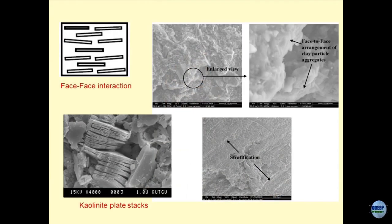In your soil mechanics books, you have studied face-to-face interaction of particles — you call this dispersed structure. In real life, this is how it looks. It is very intricate — these are the sheets of clay particles. You can see very clearly: this is one sheet of a clay particle sitting on another sheet, another sheet, and so on — just like the loaves of bread. This is what is the face-to-face arrangement of the clay particles.